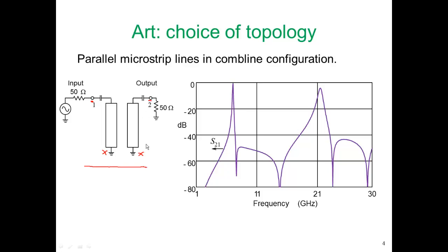We could perhaps have more than two coupled lines, but look at the response of this coupled line pair. Here's the response shown on the right. We start off with S21 equal to minus 80 dB.